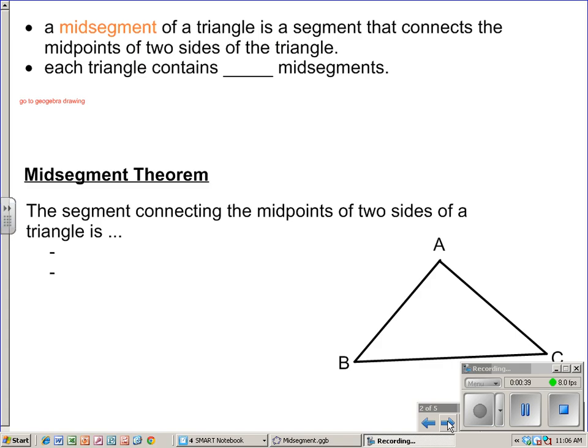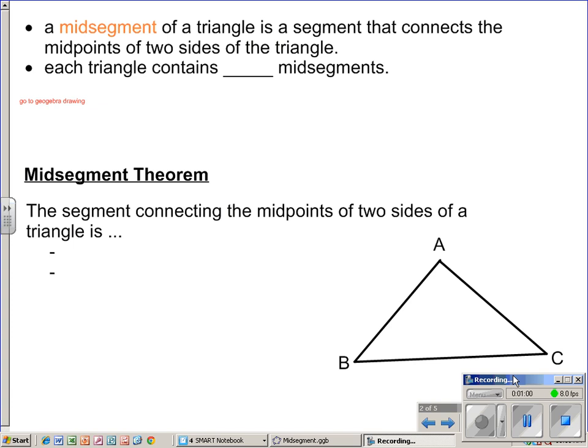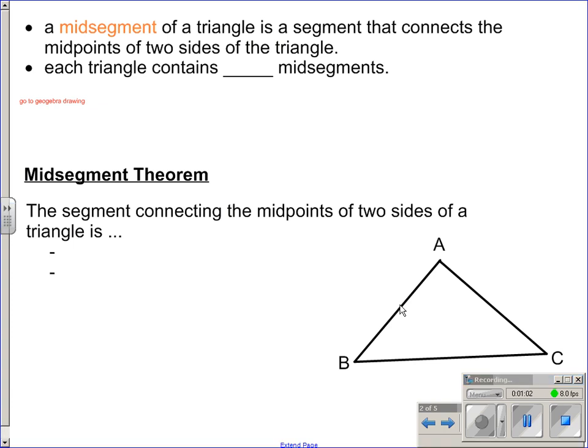Definition of a midsegment. Go ahead and hit pause, copy that down real quick. A midsegment of a triangle is a segment that connects the midpoints of two sides of the triangle. Just looking down here at this triangle ABC, let me move this box a little bit. If we put the midpoint of AB roughly there, put the midpoint of AC roughly there, the midsegment is the segment connecting those two things.